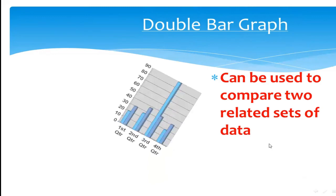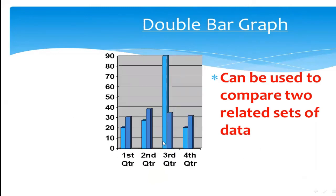Now you can see this is a double bar graph. In one group there are two different types of bars — one is light blue and the other is dark. Each color indicates a different data set. On the horizontal axis you can see first quarter, second quarter, third quarter, and fourth quarter — maybe they are playing a game or tracking something over time.